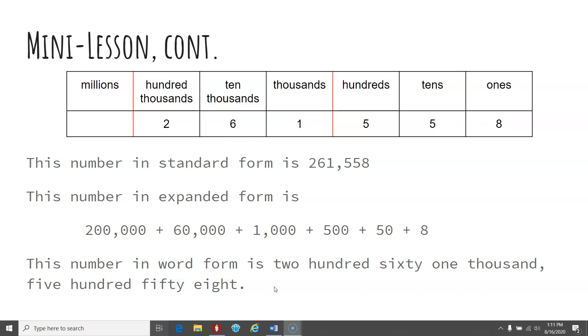If we think about place value and expanded form, we have a 2 in the 100,000, so that is 200,000. We have a 6 in the 10,000, so that is 60,000.